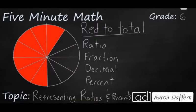Figuring out the ratio is pretty easy. That's 7 red to a total of 12. So that's going to be 7 twelfths as your fraction.